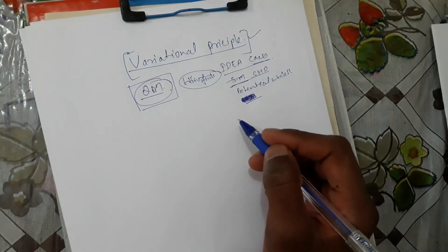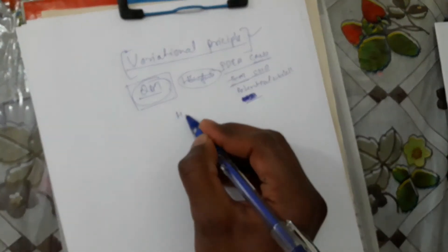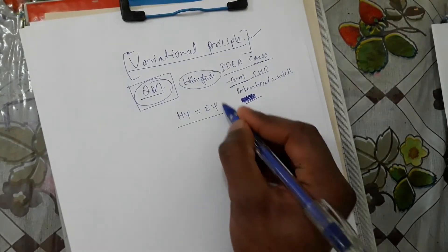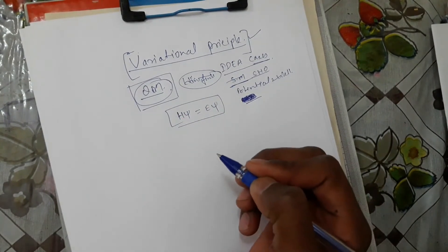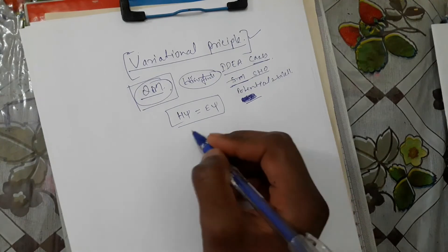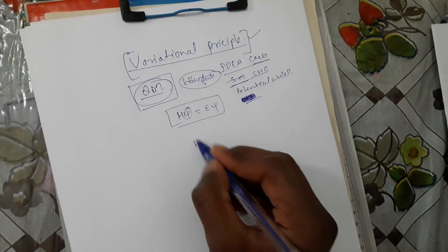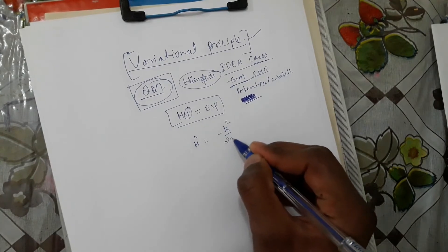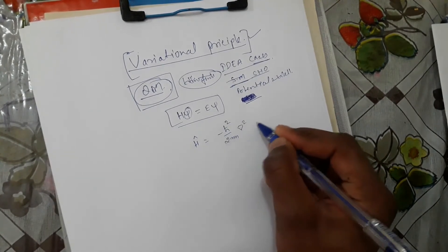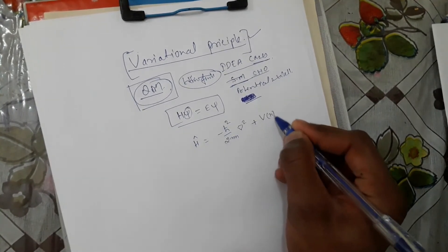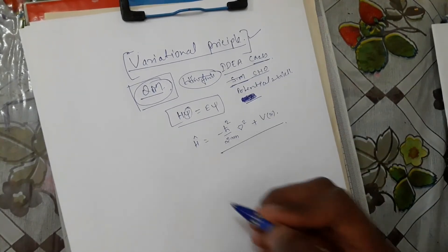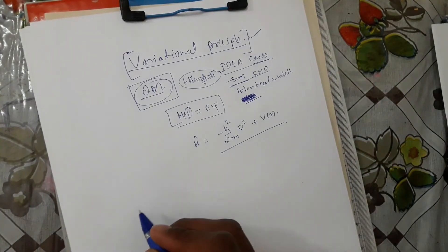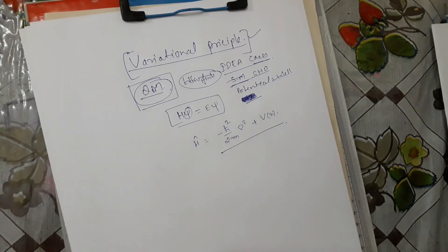We know that the energy can be found by solving the Schrödinger equation, which is very famous. These equations involve the Hamiltonian, and normally for any particle having potential energy plus kinetic energy, the operator looks like this.